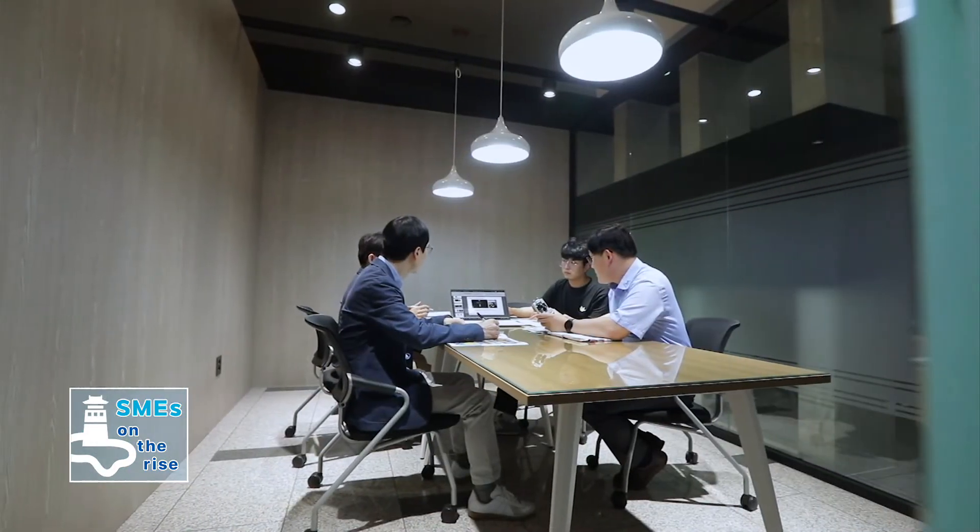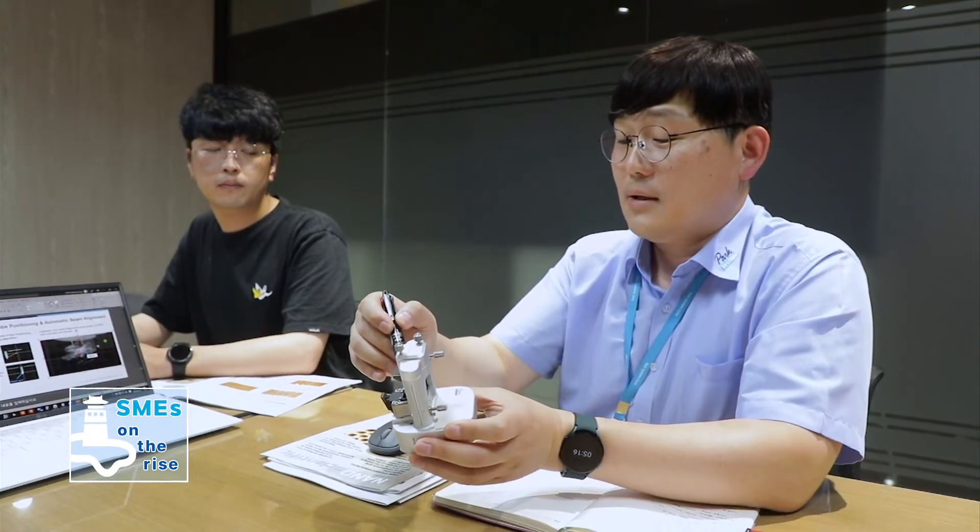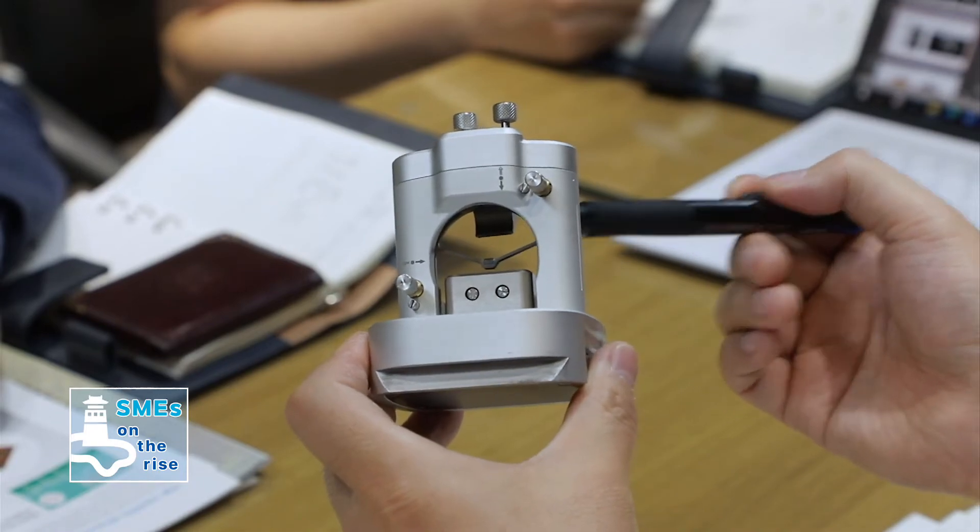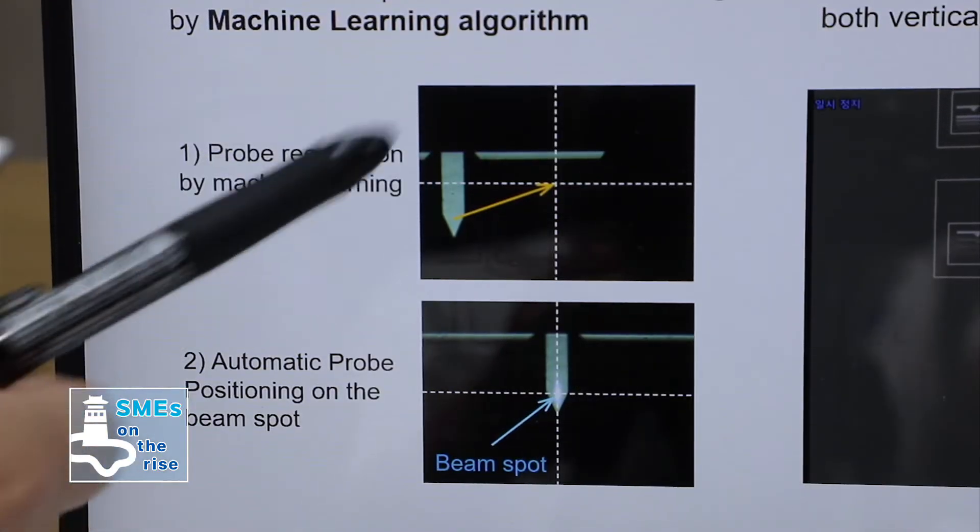The atomic force microscope market has been dominated by leading countries as it requires cutting-edge technologies and talented researchers. Park Systems has led the market by developing innovative source technologies. The company is currently producing 140 atomic force microscopes a year and they are provided to many renowned institutes in the country.